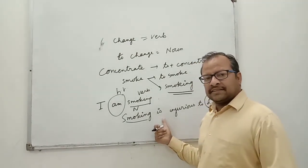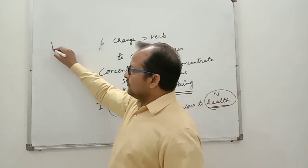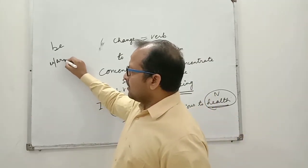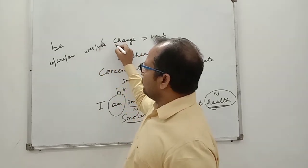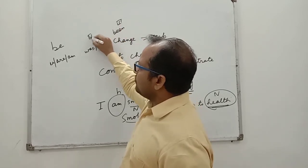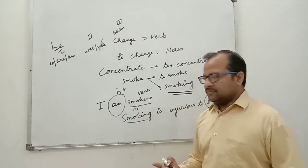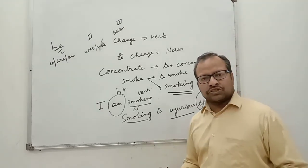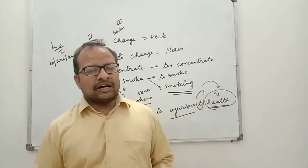Is is nothing but the be form. Whenever you come across the be form, the first form will be is, are, am, and the second form will be was and were, and third form will be been. After the be form, you will find adjective. So this is the adjective, and this is preposition, and after preposition, you will find noun form.